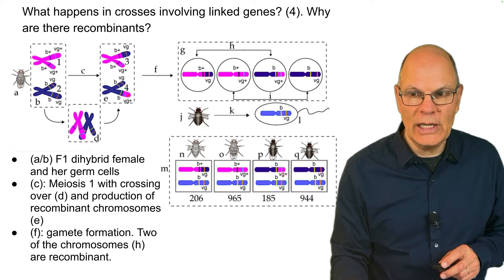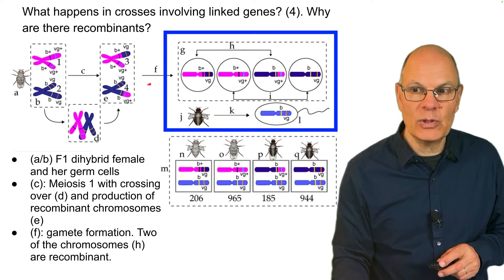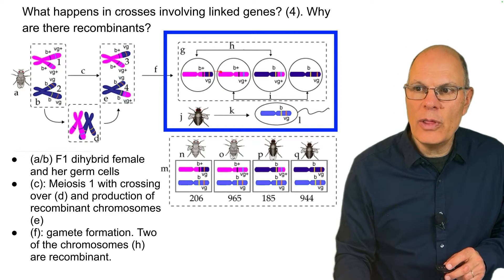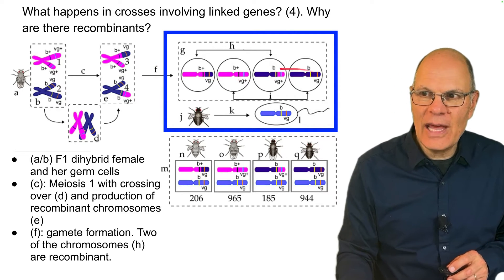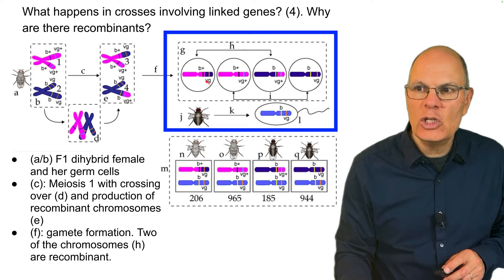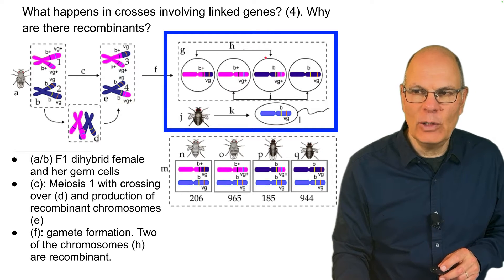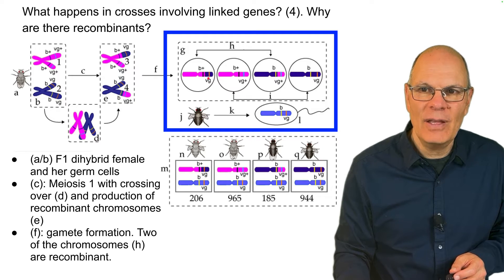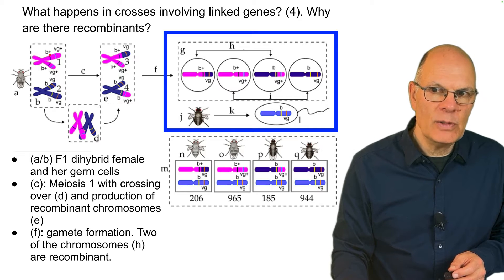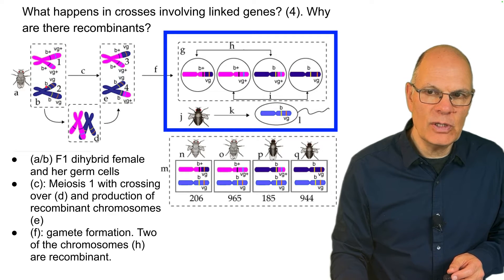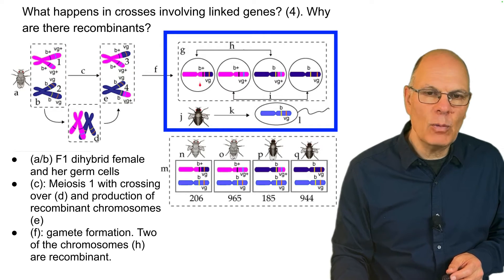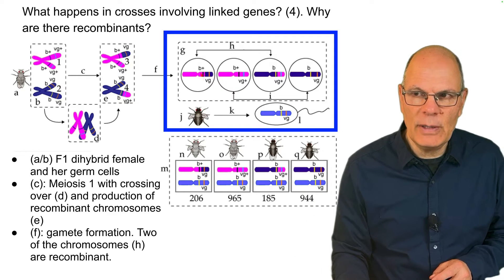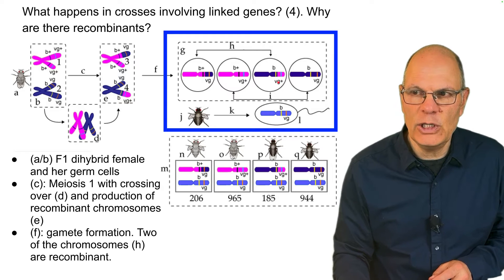Now we complete meiosis and go through gamete formation. Of the eggs that the female produces, two of them at letter H are recombinant — they have B-plus and VG. The parental chromosomes are B-plus VG-plus and B VG. The recombinant ones are where those alleles swapped places: a recombinant B-plus VG, and a recombinant B VG-plus.